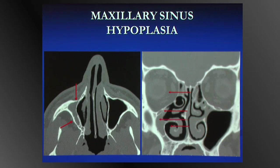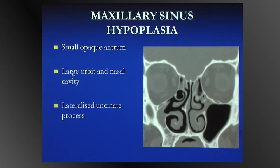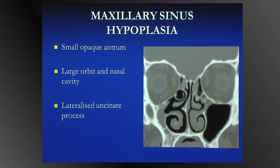If we don't appreciate that the uncinate process is plastered up against the inframedial orbital wall, when the surgeon goes in, they could inadvertently damage the inferior orbit. So the opacified hypoplastic antrum has a small opaque antrum, secondary signs of large orbit and nasal cavity, and a lateralised uncinate process — crucial to recognise in planned surgery. The maxillary alveolus is thick, which is an important differentiator from the silent sinus syndrome.